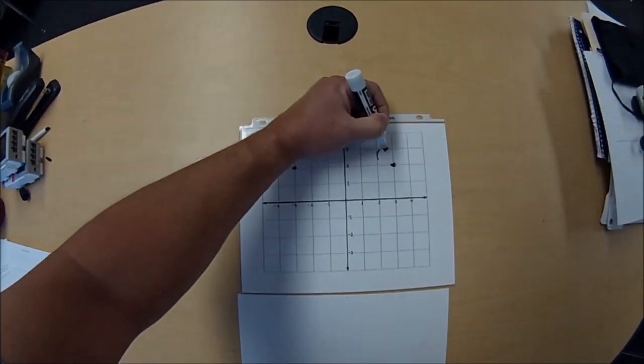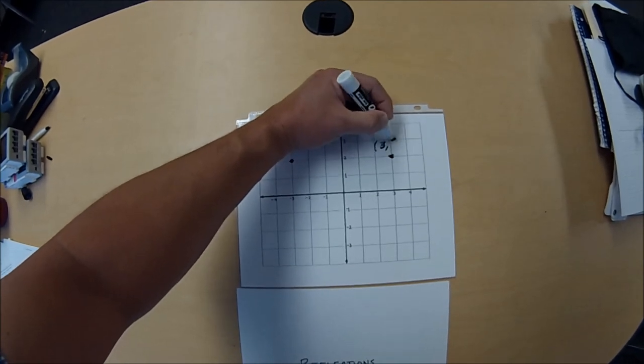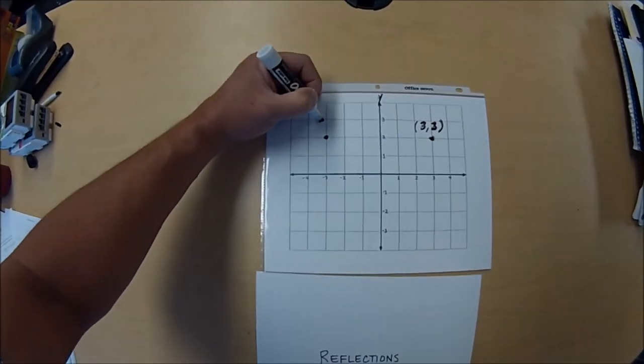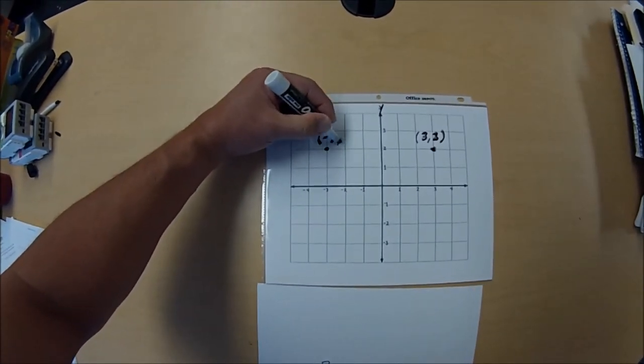So if you take a look at the ordered pairs, if this is (3,2), and this is (-3,2)...